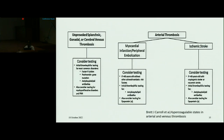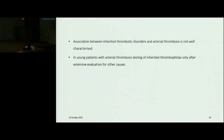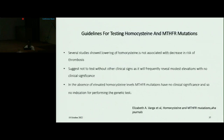In arterial thrombosis, thrombophilia workup is not recommended. In unprovoked splanchnic, gonadal, or cerebral venous thrombosis, we can consider testing at the initial visit. The association between inherited thrombotic disorders and arterial thrombosis is not well characterized; testing of inherited thrombophilias should only be done after extensive evaluation for other causes. Regarding homocysteine and MTHFR mutation testing: several studies show that lowering homocysteine is not associated with a decrease in thrombosis risk. We suggest not testing without other clinical signs, as it will frequently reveal modest elevations with no clinical significance. In the absence of elevated homocysteine levels, MTHFR mutations have no clinical significance, so there is no indication for performing the genetic test.